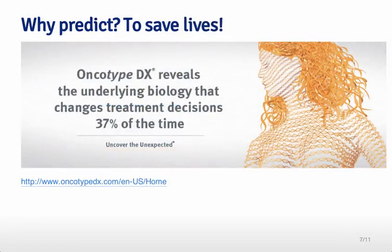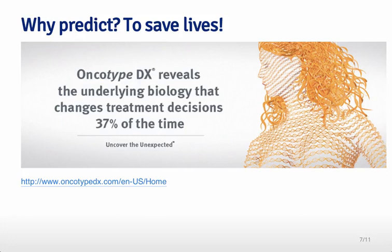This is a little closer to my area of research. You might also predict for the purposes of better medical decision-making. Oncotype DX is a prognostic gene expression signature that can be measured in women who have breast cancer and can be used to predict how long they'll survive given a particular set of conditions. That can be very useful for medical doctors when making decisions about patients with breast cancer.